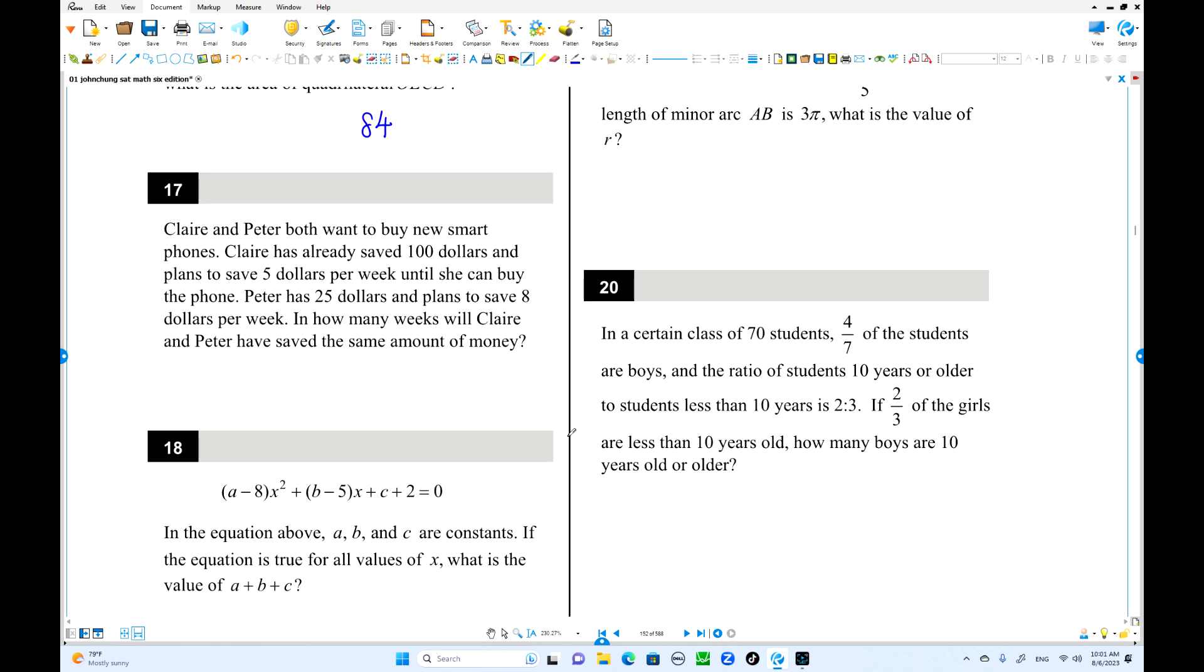Number 17. Kale and Peter both want to buy a new smartphone. So Kale has already saved $100 and he's going to pay $5 per week. The number of weeks is W. This is the rate. Always comes with the variable.